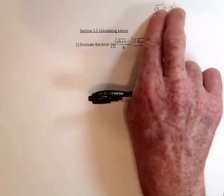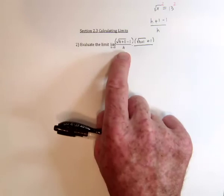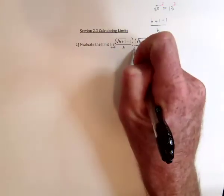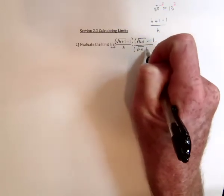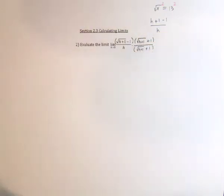So in algebra, you have to do the same thing to both sides of an equation. With a fraction, you have to do the same thing to the numerator and denominator. So we need to multiply here by the conjugate that we used in the numerator.